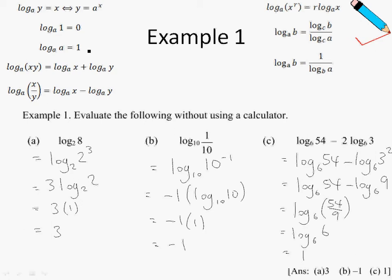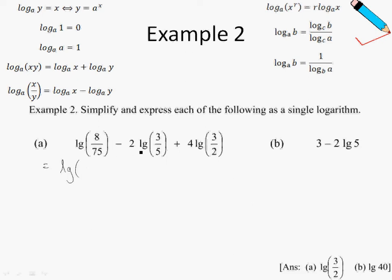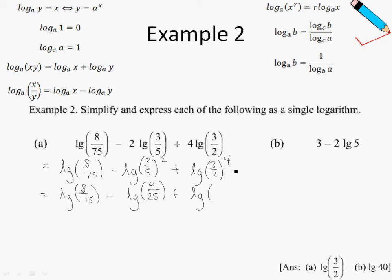In example 2, in example 2a, we will first apply law number 6 to the second and the third expressions. So the first one, I'm going to leave it untouched. I'm going to bring the power, the 2, to become the power of 3 fifth. So this becomes 3 fifth squared, and 4 to become the power of 3 over 2. Let me just simplify further first. So 8 over 75 minus log 3 over 5 squared, 9 over 25, and this is just 3 to the power 4 divided by 2 to the power 4, which is just 81 over 16.